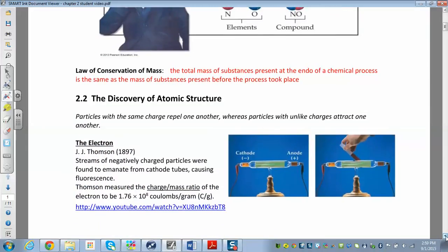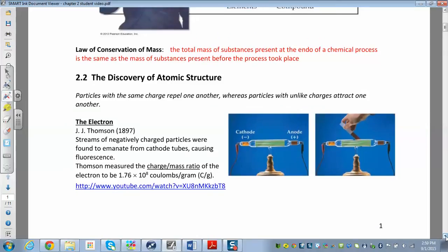The law of conservation of mass just says that when you have a chemical process, at the end you should have the same amount of substance as what you started with. I see a typo there. At the end of a chemical process, you should get the same amount as you had before. So we'll see that when we balance reactions.